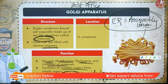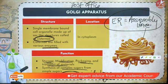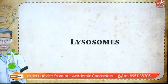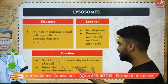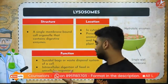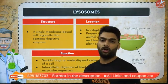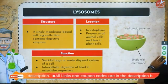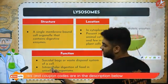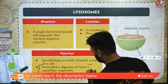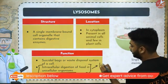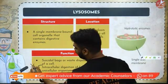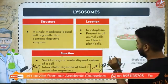Imagine your cell is a factory: the endoplasmic reticulum is the assembly line, the Golgi apparatus is the post office — it stores, modifies, packs, and transports — and lysosomes are the suicide bags. Moving on, lysosomes are the suicide bags; they dispose of waste and perform intracellular digestion of food in unicellular organisms. This is also a very important exam question: what helps intracellular digestion in unicellular organisms? It is lysosomes.